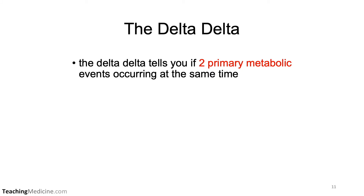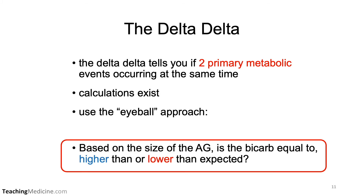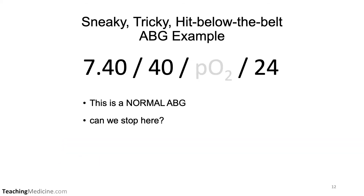In summary, the delta-delta tells you if there are two primary metabolic events occurring at the same time. There are calculations you could use, but I prefer the eyeball approach: based on the size of the anion gap, is the bicarb equal to, higher, or lower than what I would expect? Here's a sneaky, tricky example — a completely normal ABG. Can we stop our analysis here?